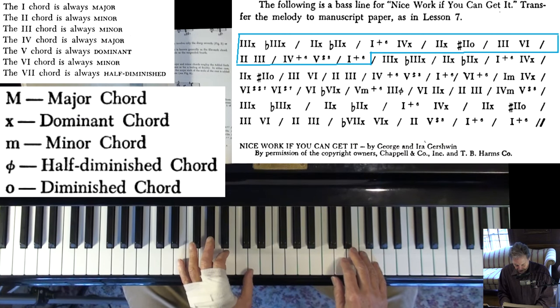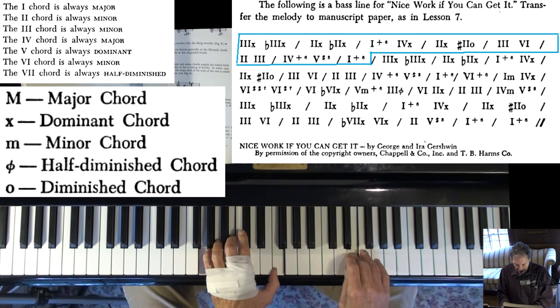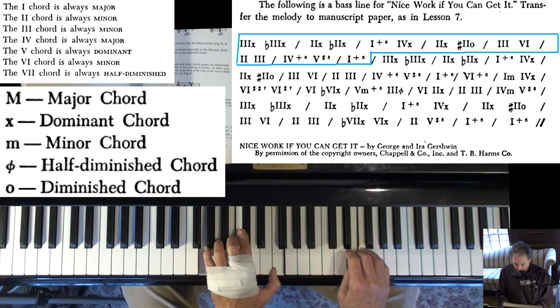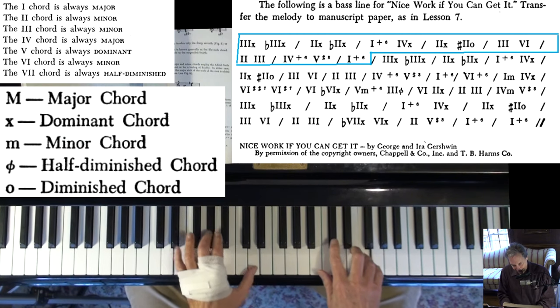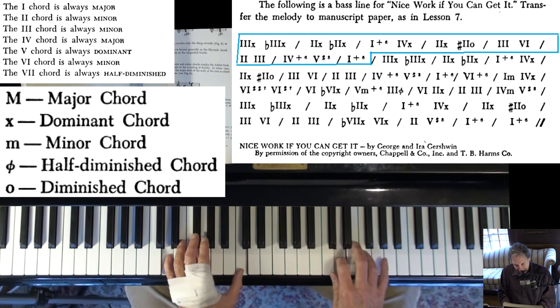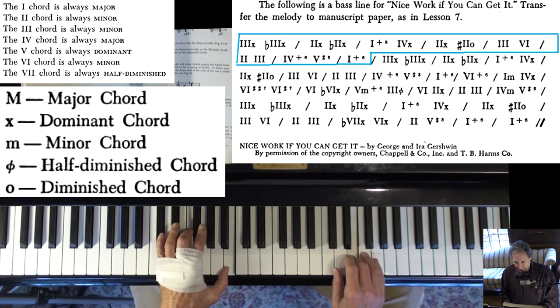Typically you would go 3, 6, 2, 5. That's really the right changes for this song. But he's got it all dominant chords. And those flat ones are the ones that are tritone substitutions.